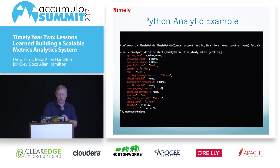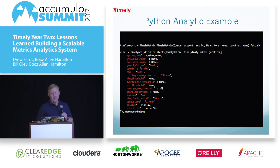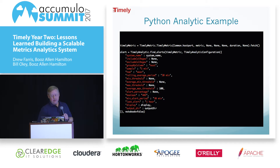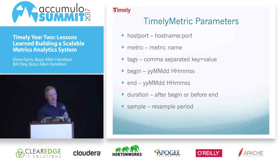This is an example of running the Timely metric, pulling back all the data, and running the analytic on it to find alerts. Some of the things included are a group-by column for the pivot — in this case it's host, but you could also do rack or type of host. You specify how you want to sample — mean, minimum, or maximum — and the sample time, in this case five minutes. When pulling back the data you provide the host and port, the metric, the tags you want to filter on, and begin, end, and duration to supply the time range, plus a resample parameter.